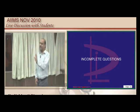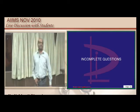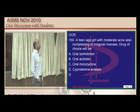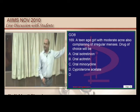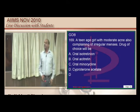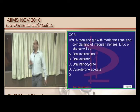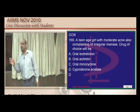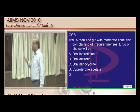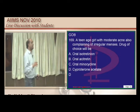A teenage girl with moderate acne and irregular menses: she has a hyperandrogenic state, so cyproterone acetate, which is an anti-androgenic drug, can be given to manage both the acne and irregular menses.